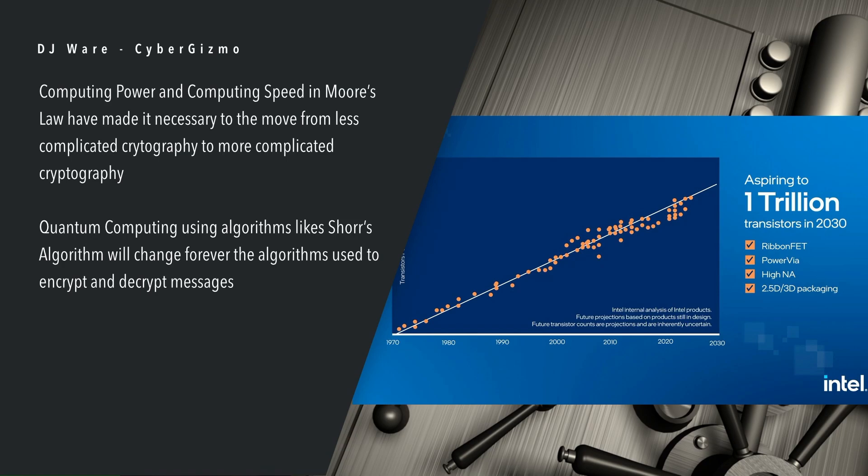One of the problems we have with any kind of encryption is Moore's Law. As computing power and computing speed increase over time — and I know a lot of people are saying Moore's Law is dead, it might be — but computers are still getting faster. The faster those machines become, the more powerful they become. The more things that we see drawn into the processor, like cryptographic capabilities, allow it to encrypt and decrypt right on the CPU.